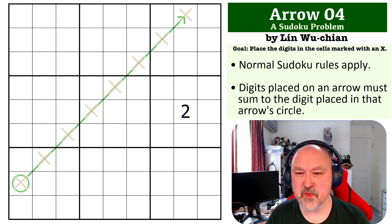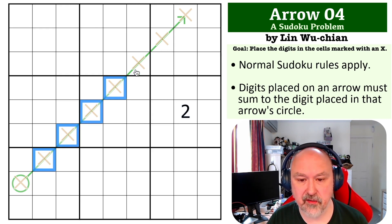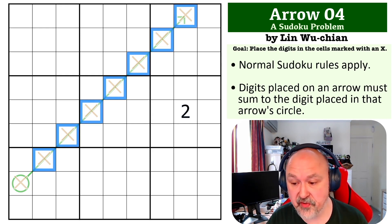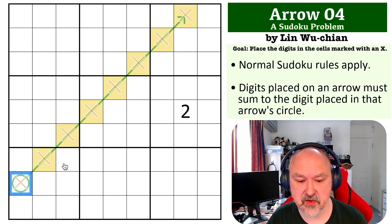Okay, so this one is probably one of the easiest ones I've done in a week or so. We've got this very long arrow, and all of the digits that are placed on that arrow, the sum of all of those digits there has to be what goes in the circle.